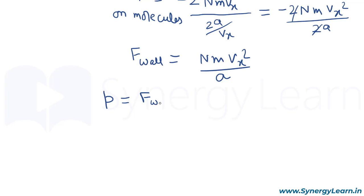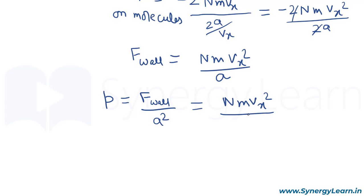Therefore pressure P equals force on the wall divided by area. Since it is a cube, the area is a². This gives P equals Nm·vx² divided by a³, and since a³ represents the volume V of the container, we get P·V equals Nm·vx².